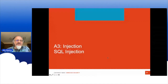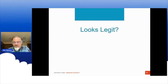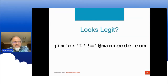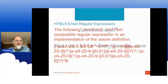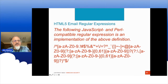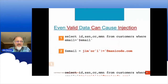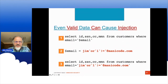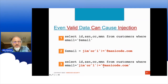Looking at the OWASP Top 10 for injection — how do you get injection right? How about input validation? No — here's the problem: a legal, valid email address can be a SQL injection payload. Here's the regular expression for email according to the HTML5 standard, and with this legal valid email I can hit a SQL injection endpoint: SELECT data FROM customers WHERE email IS 'jim' OR '1' != 'manico.com'. That's OR-true — I get the whole customer table. Even valid data can cause injection.